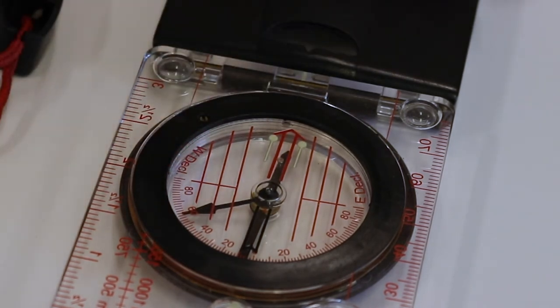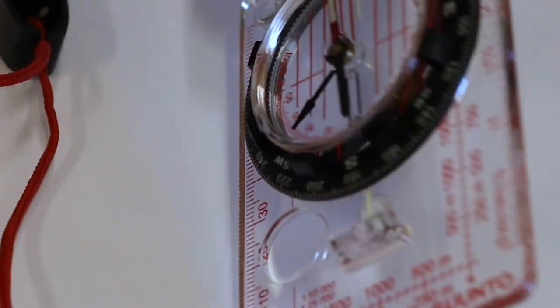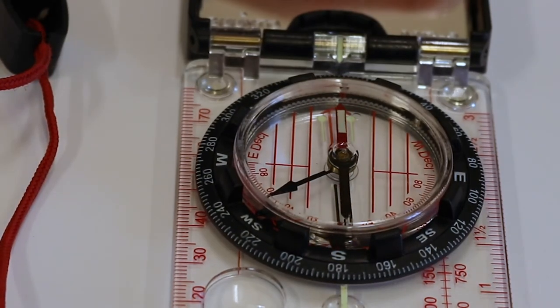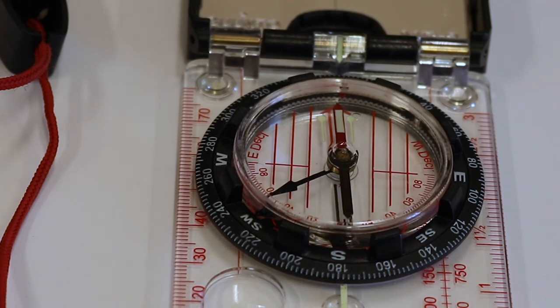Once the compass has been correctly adjusted for declination, all readings made will be true north readings and need not be adjusted for declination until you move a substantial distance to another location.